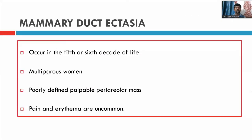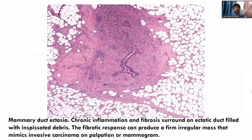Another entity is mammary duct ectasia, which generally occurs in the fifth or sixth decade of life and is more common in multiparous women. It presents as a poorly defined palpable periareolar mass. Unlike inflammatory disorders, pain and erythema are uncommon. Histologically you see a dilated duct with dense chronic inflammatory infiltrate around it, which can form fibrosis and then a mass lesion. On ultrasound or mammogram it will appear as an irregular mass that needs to be differentiated from carcinoma.